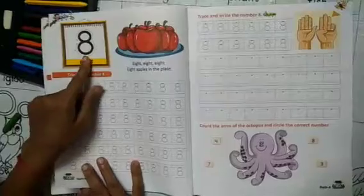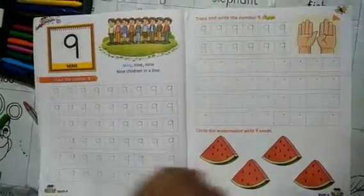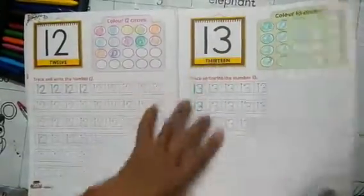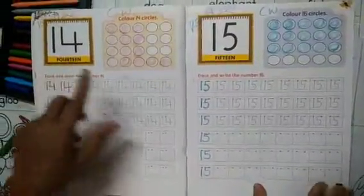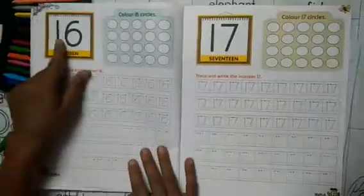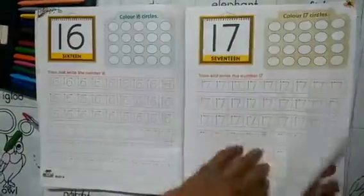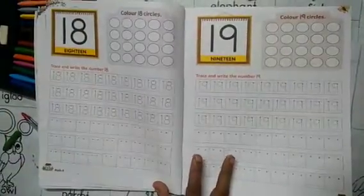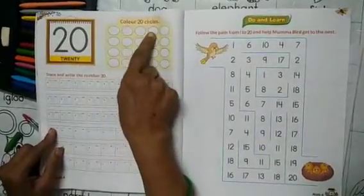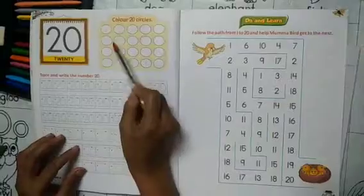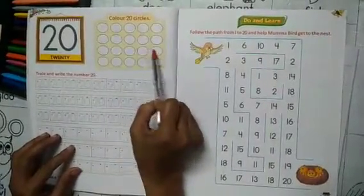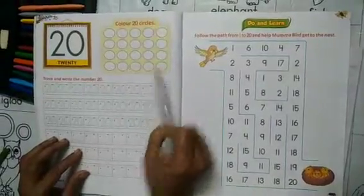4, 5, 6, 7, 8, 9, 10, 11, 12, 13, 14, 15, 16, 17, 18, 19, 20. 1, 2, 3, 4, 5, 6, 7, 8, 9, 10, 11, 12, 13, 14, 15, 16, 17, 18, 19, 20.